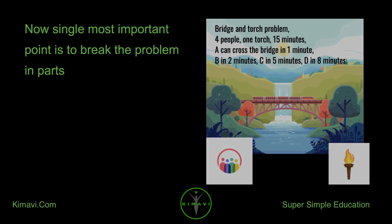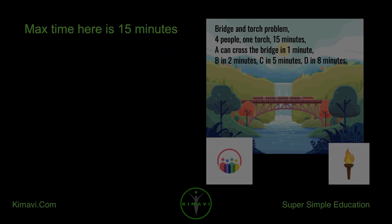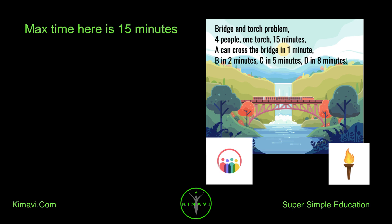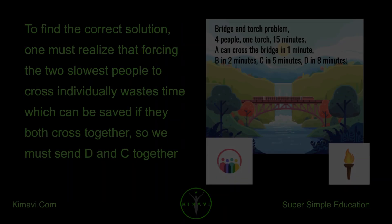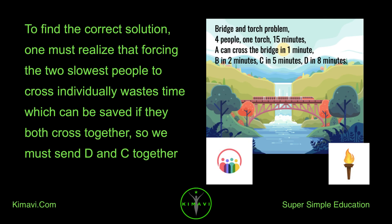The single most important point is to break the problem into parts. Max time here is 15 minutes. Worst crossing time is D in eight minutes. To find the correct solution, one must realize that forcing the two slowest people to cross individually wastes time, which can be saved if they both cross together, so we must send D and C together.